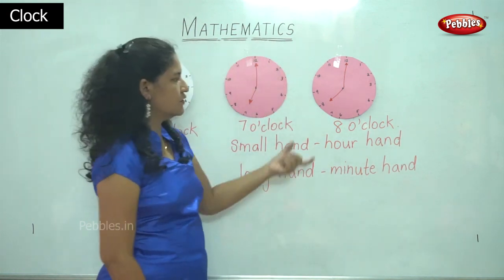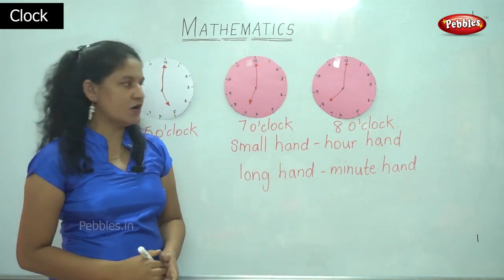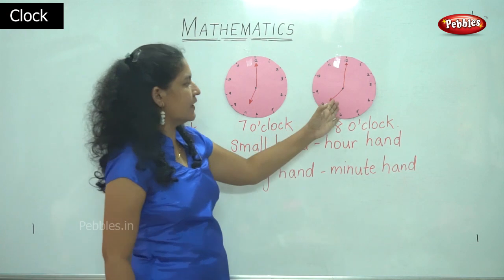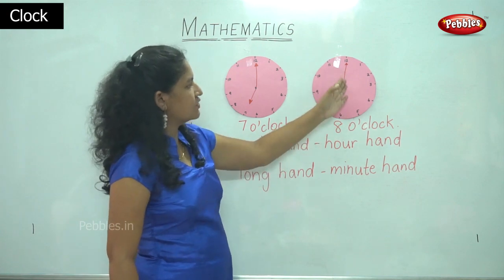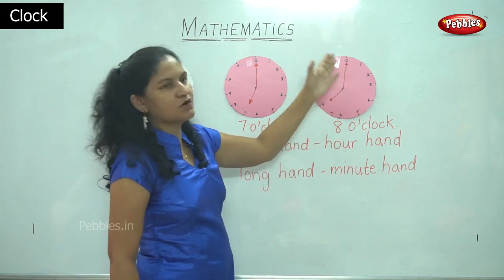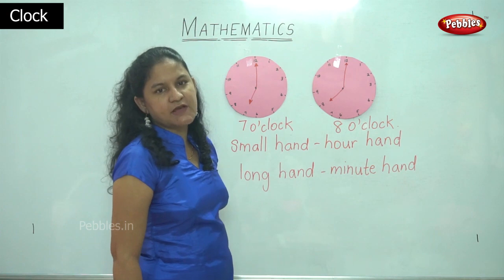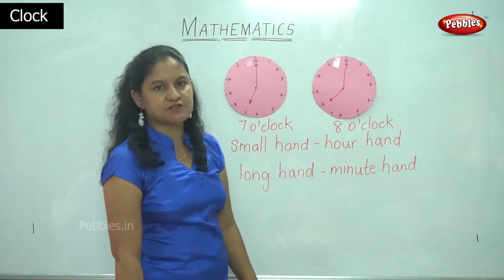When it is eight o'clock, the small hand or the hour hand points to eight and the big hand or the long hand or the minute hand points to twelve, and we read the time as eight o'clock.